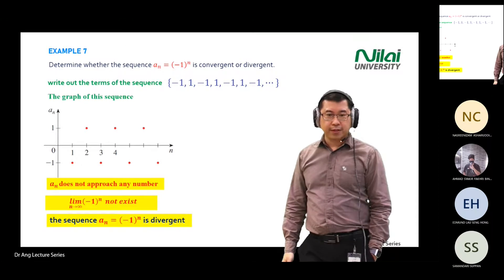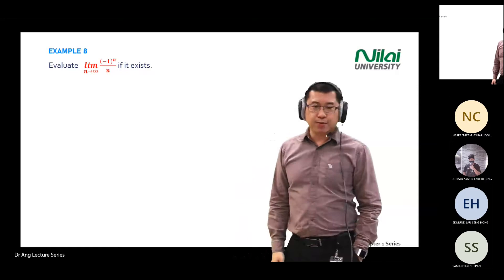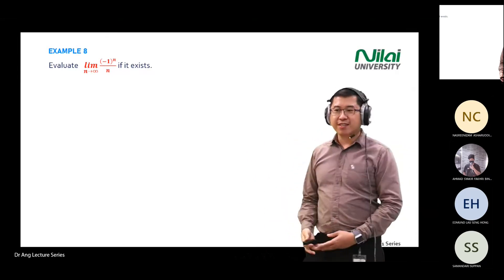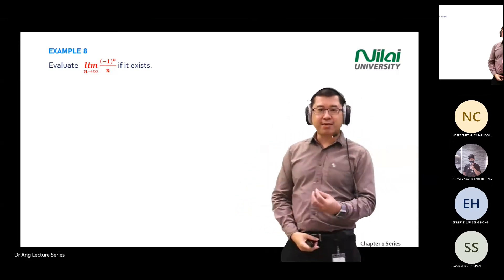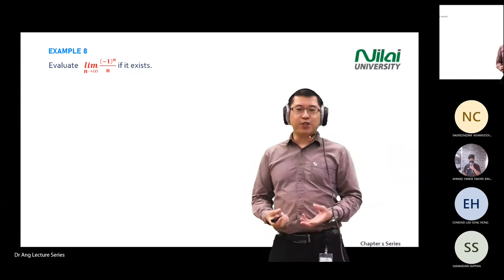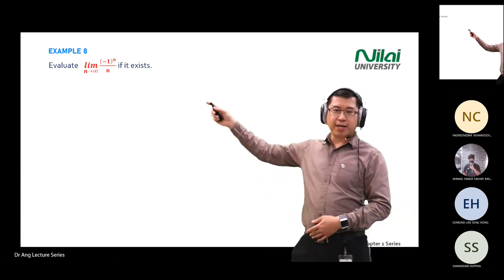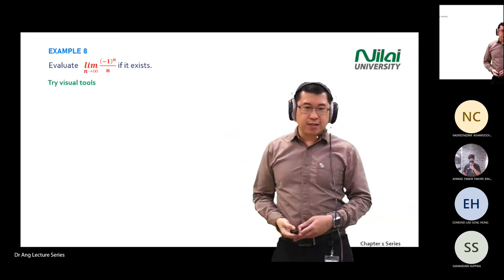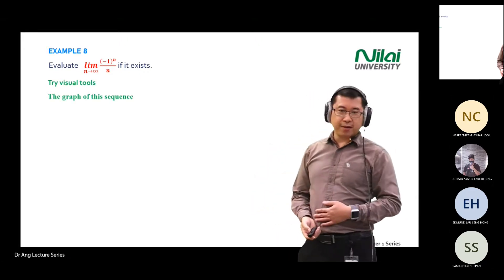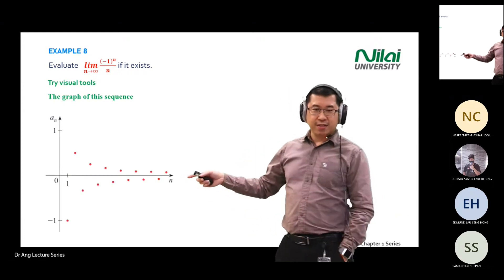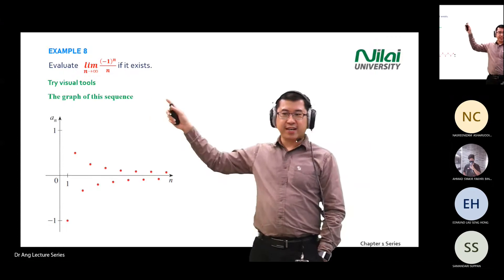Now evaluate the limit of (-1)^n divided by n. There are two ways: you can use a graph and plot the numbers by increasing n. 'Evaluate' means calculate whether the limit exists — that is, whether you get a convergent or divergent result.